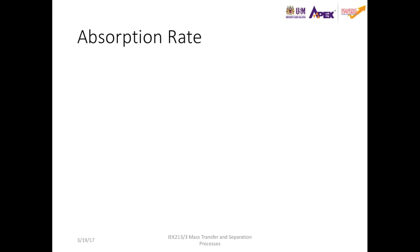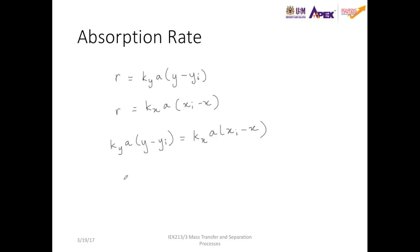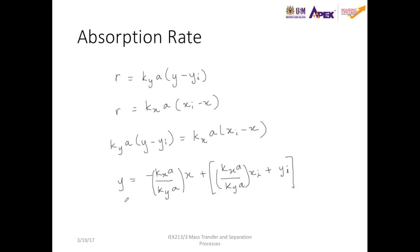We can combine the rate equations in the column to calculate the interface composition, xi and yi. Since R equals to kyA times (y minus yi) and R equals to kxA times (xi minus x), and the rate in the gas phase and the rate in the solvent phase is the same, we can equate them and rearrange for y. We get y equals to minus (kxA over kyA) times x plus (kxA over kyA) times xi plus yi. This gives us the relationship between the moles of i in the solvent and the moles of i in the gas at different levels within the column.